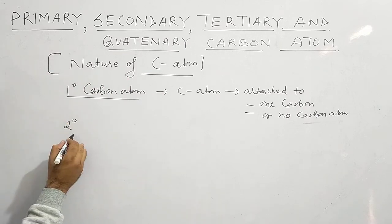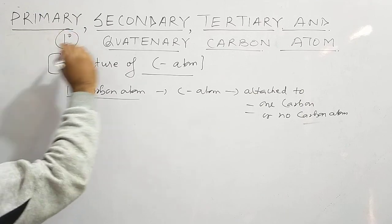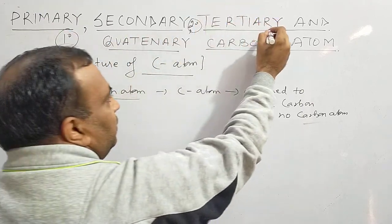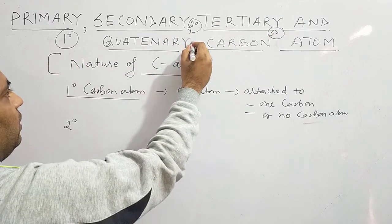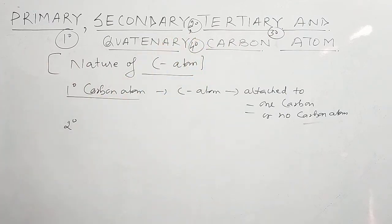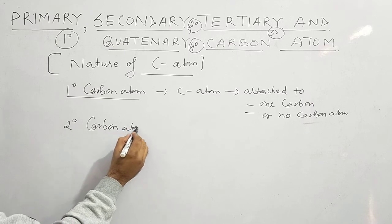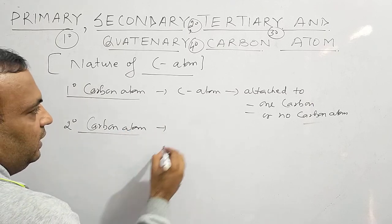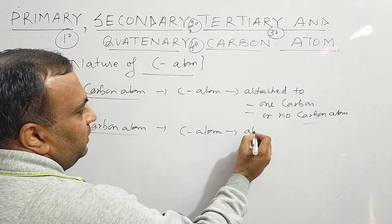The degree notation is used as a symbol for each type. One degree (1°) is the symbol for primary, two degree (2°) is the symbol for secondary, three degree (3°) is the symbol for tertiary, and four degree (4°) is the symbol for quaternary carbon atom.